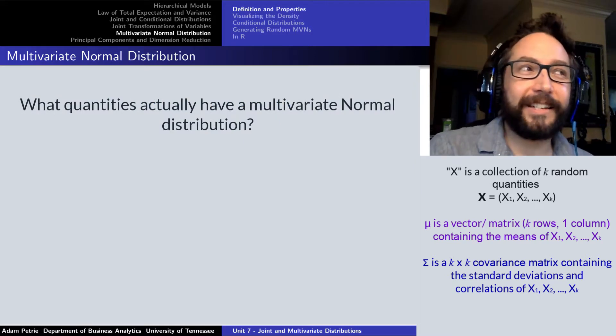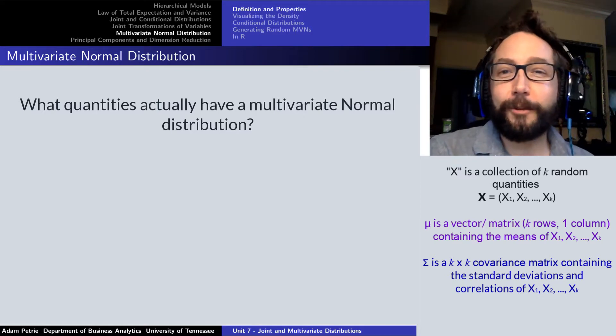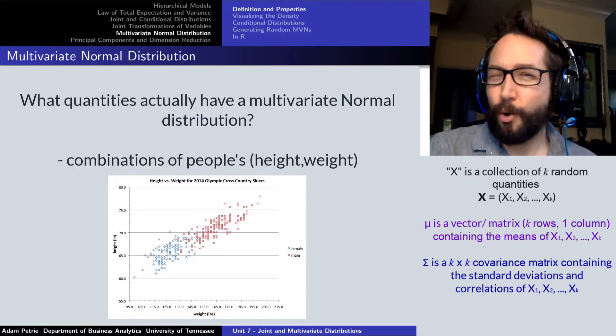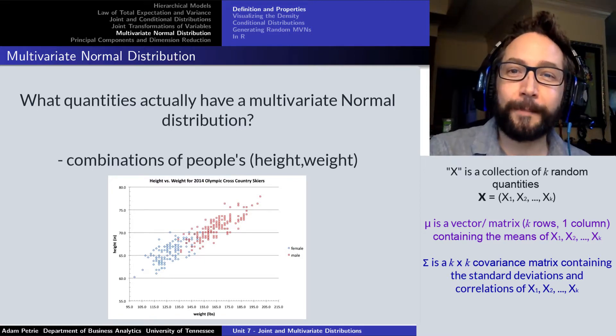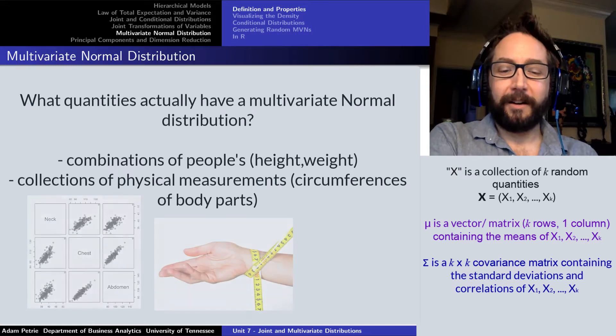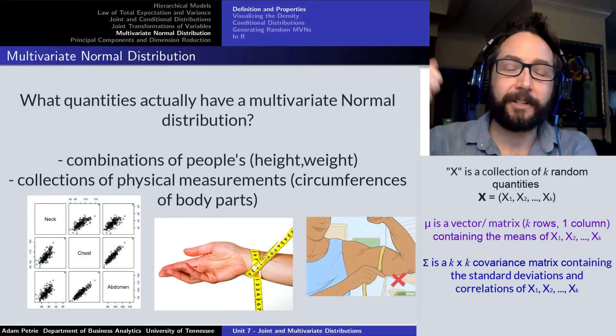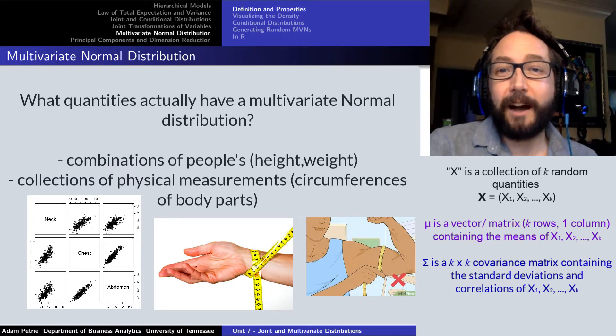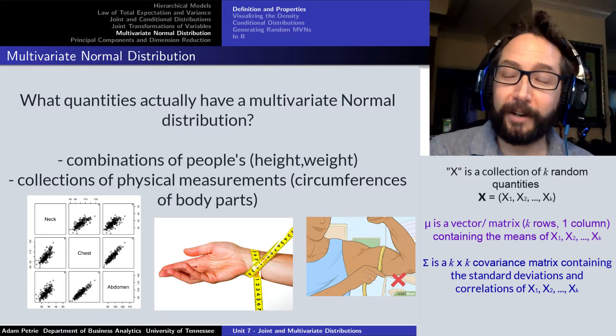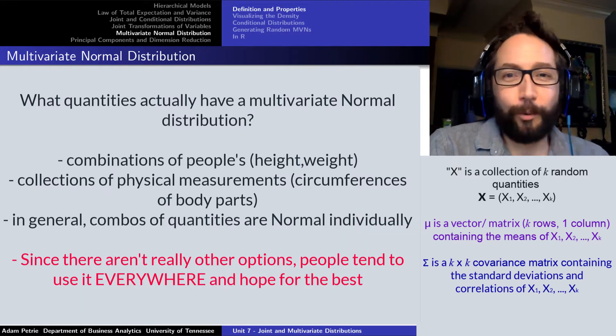A lot of things at least vaguely resemble having a multivariate normal distribution. If I want to know the distribution of people's heights and weights, very close to a multivariate normal, two quantities, so we'd call it a bivariate normal. If I was looking at the distributions of measurements of different circumferences on a body, like wrist, abdomen, and bicep circumference, the combination of circumferences is typically well described by multivariate normal distribution.